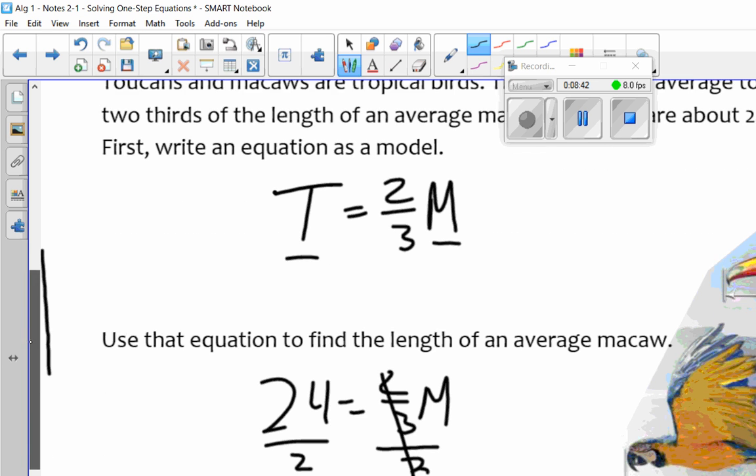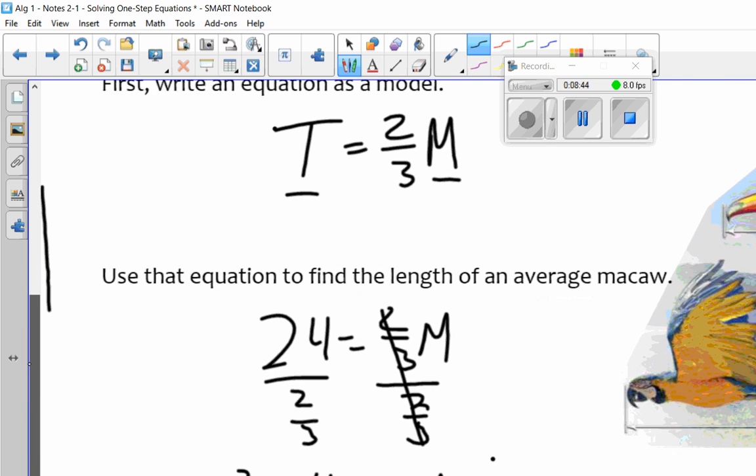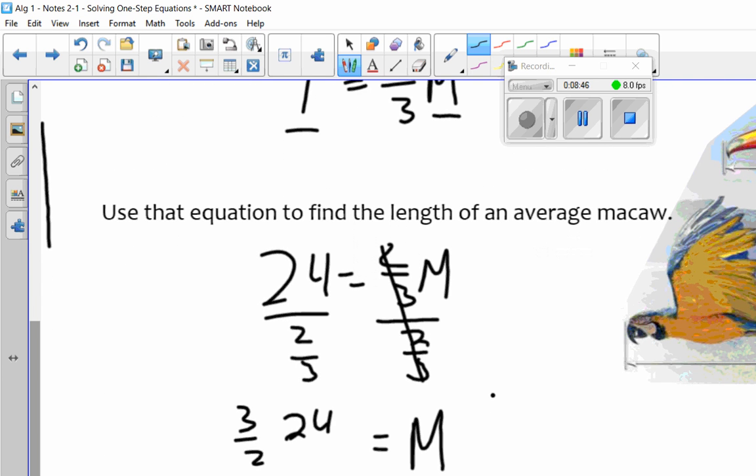We wrote the equation with that, and then they told us that the toucan was 24. So I substituted 24 in for T. Over here, I had to get M by itself, so I divided by two-thirds, both sides. But remember, when you divide by a fraction, I had to flip it.